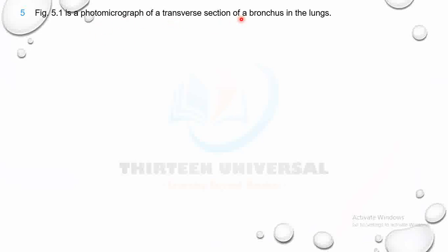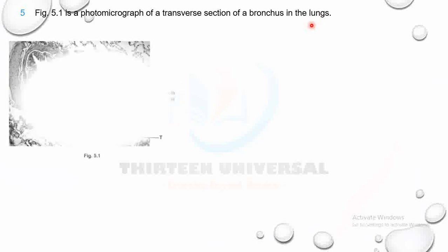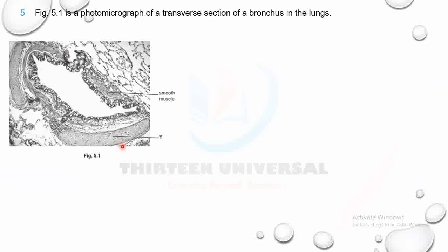Figure 5.1 is a photomicrograph of a transverse section of a bronchus. You can see smooth muscle, ciliated epithelium, the lumen, loose tissues with blood vessels, and mucus glands. Tissue T is at the base — identify it. It appears as irregular plates or blocks, which indicates cartilage.